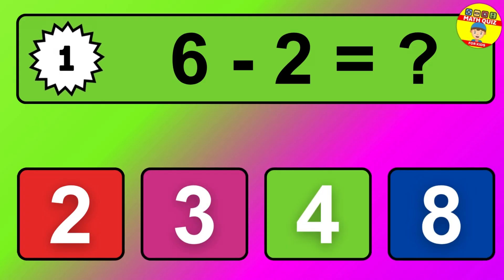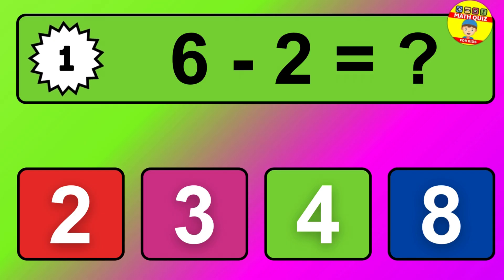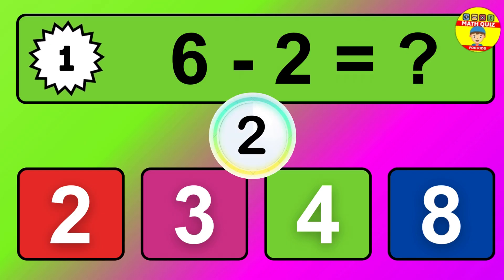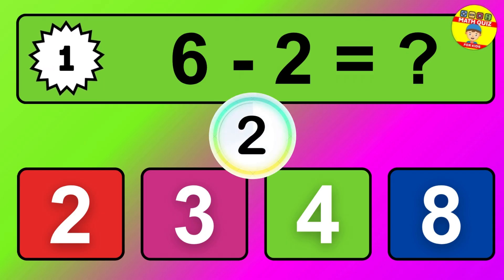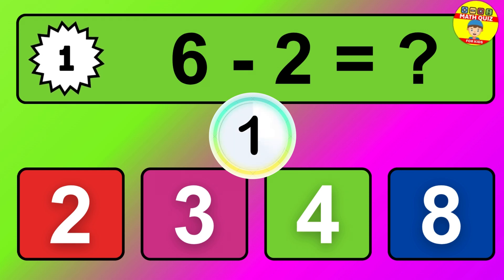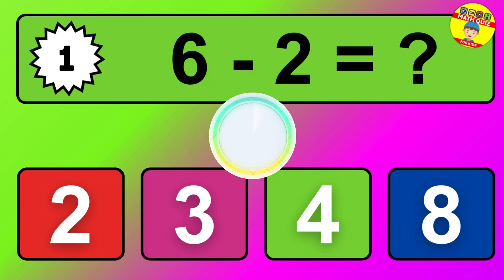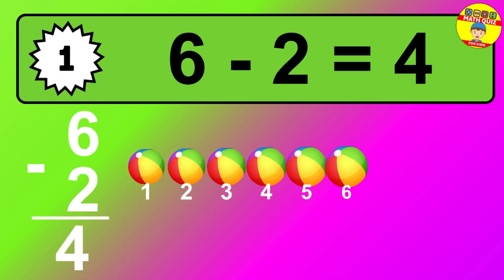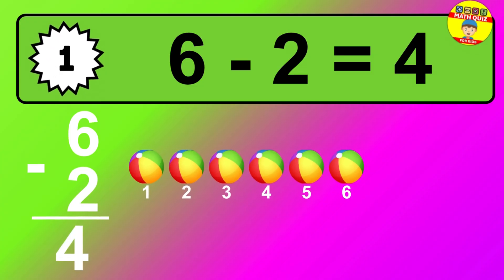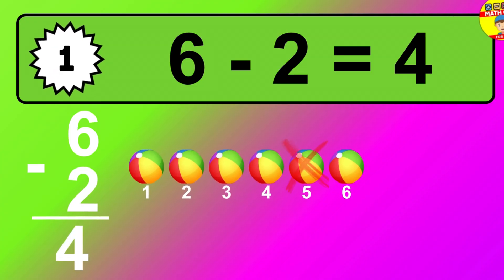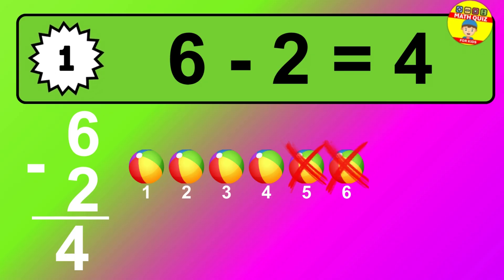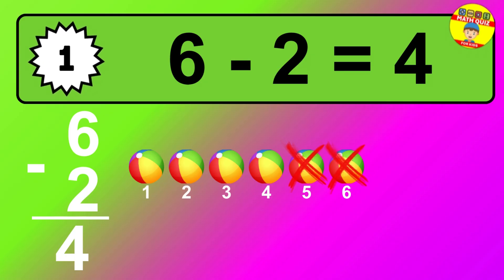Question 1. 6 minus 2 equals what? The answer is 6 minus 2 is 4. Let's count it: 1, 2, 3, 4.